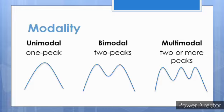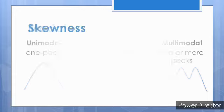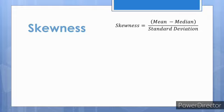Symmetry and modality are independent concepts. When two halves of a distribution can be superimposed on each other as mirror images, the distribution is said to be symmetrical. Sometimes data are not symmetrical — if the peak is off-center, one tail of the distribution will be longer than the other, meaning it is skewed.